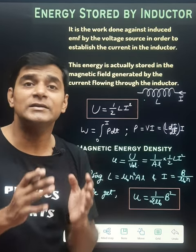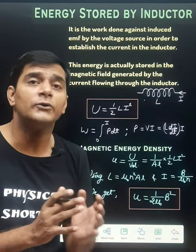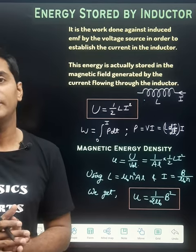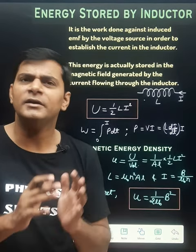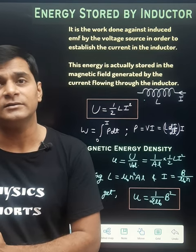The magnetic energy density is the energy stored per unit volume by the solenoid, and this energy is stored in form of the magnetic field. That's why it is called magnetic energy density.